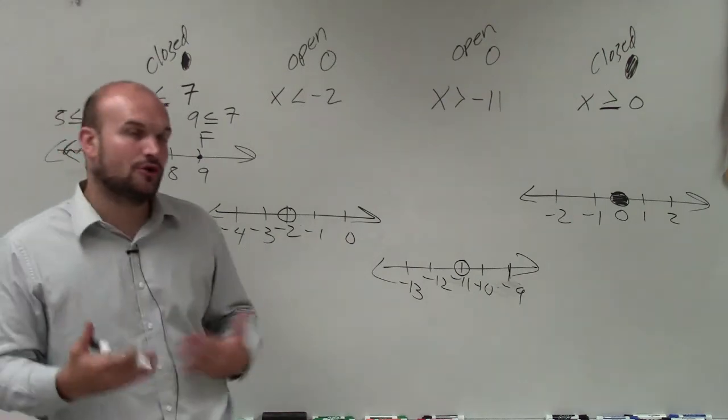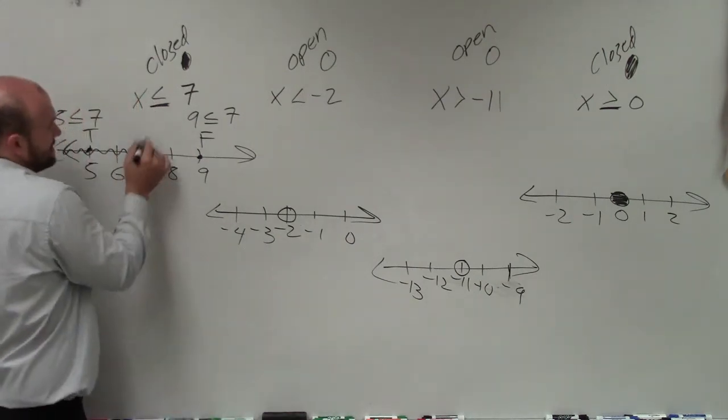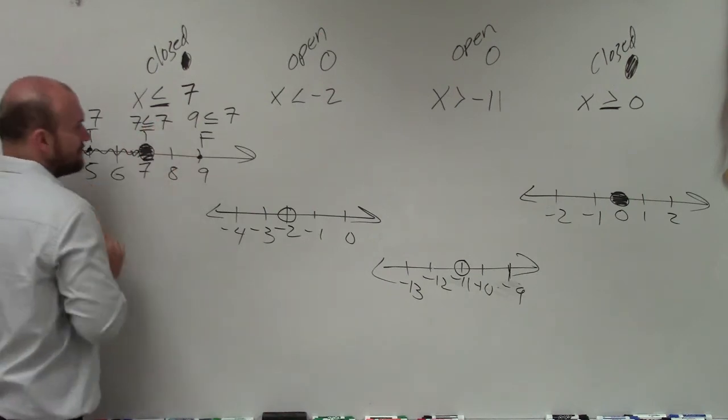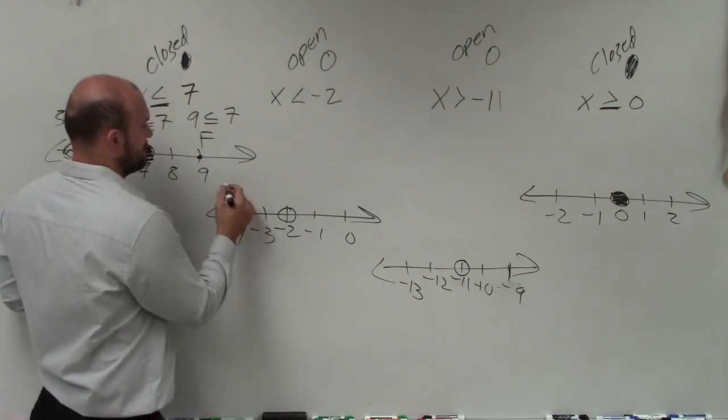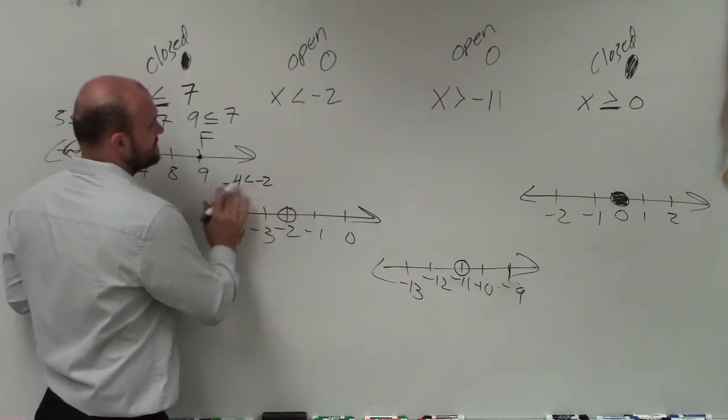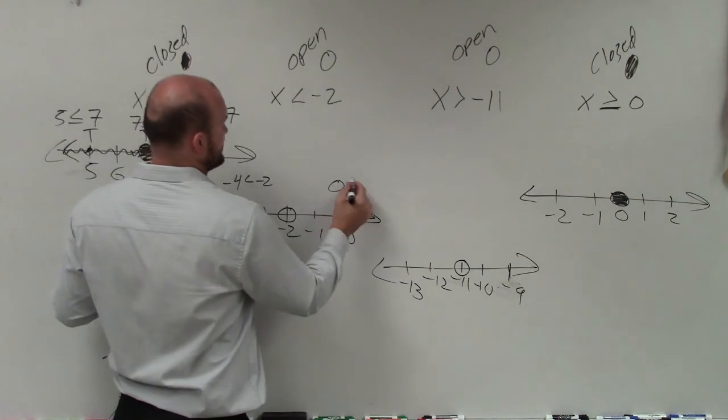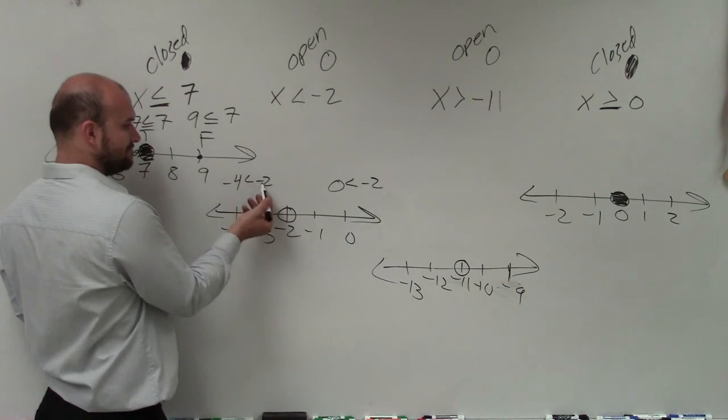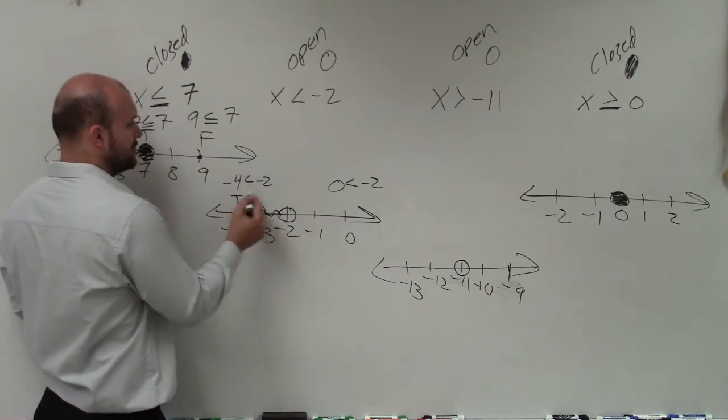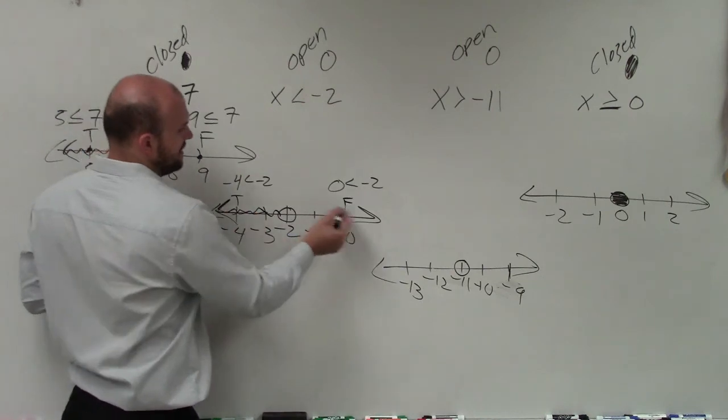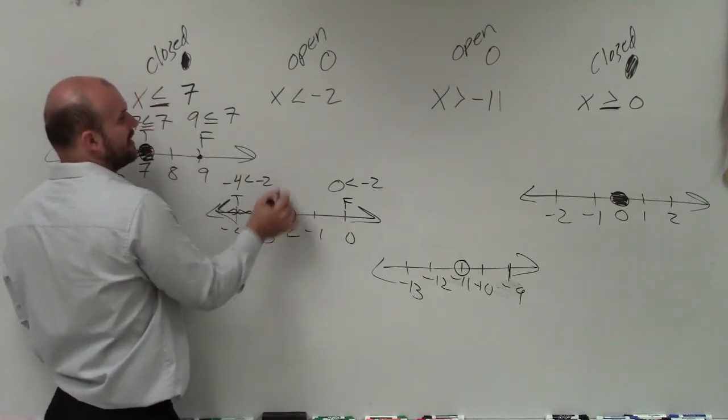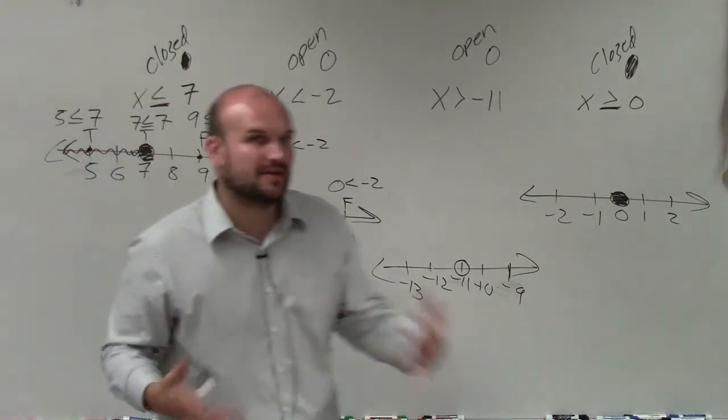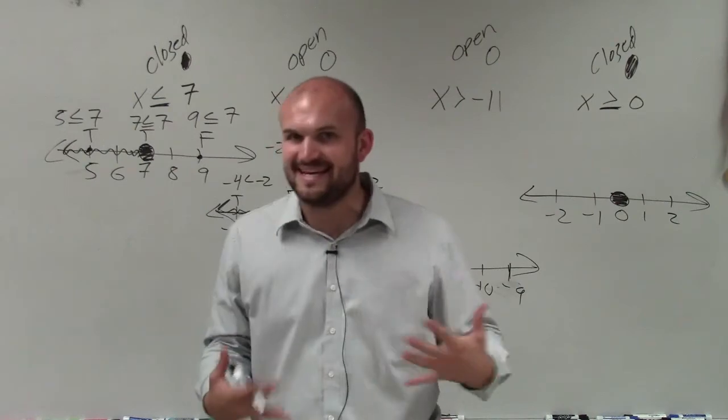And again, if you're not sure about the closed and open point, evaluate your point. Is 7 less than or equal to 7? Yes, that's true, so that's why that's shaded in. Let's do the same over here. I'll pick negative 4. So evaluate negative 4 is less than negative 2, and I'll pick 0. Is 0 less than negative 2? So again, ladies and gentlemen, we can see that negative 4 is obviously less than negative 2, so that's true. That's false. So we're going to shade to our left, and we don't shade to our right. And then you can even evaluate your point. Is negative 2 less than negative 2, which we already determined was false? So that's kind of like your for sure method of graphing.